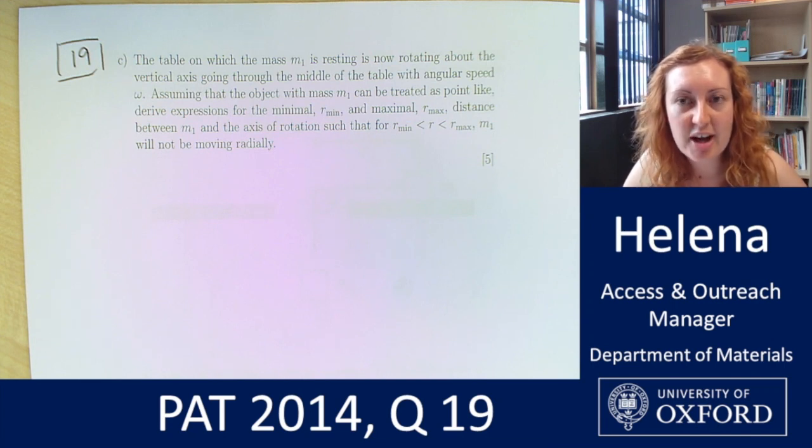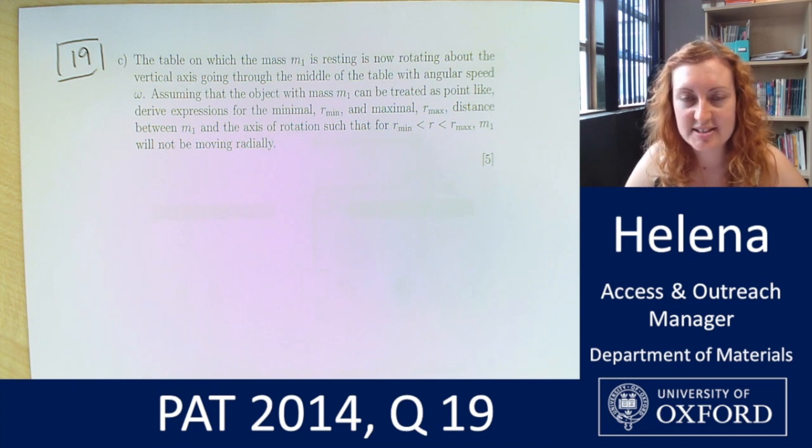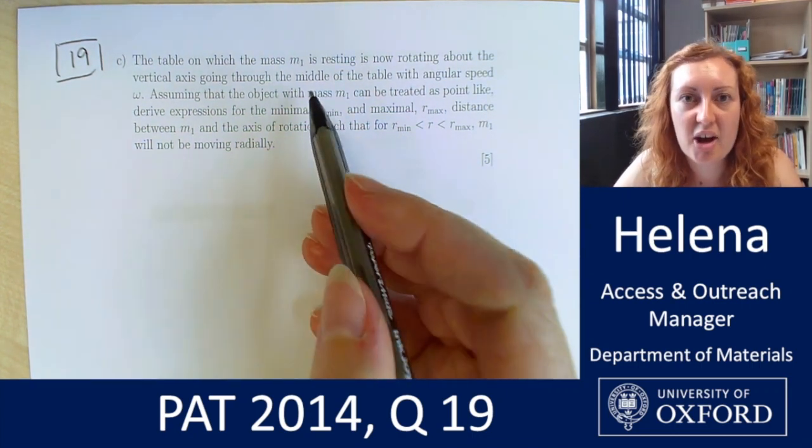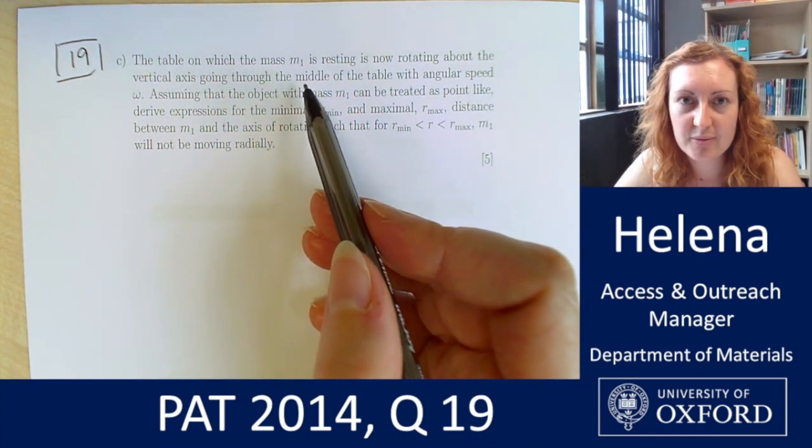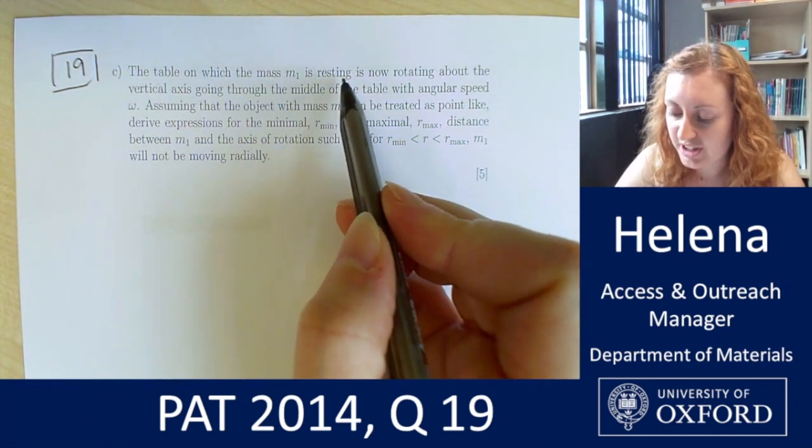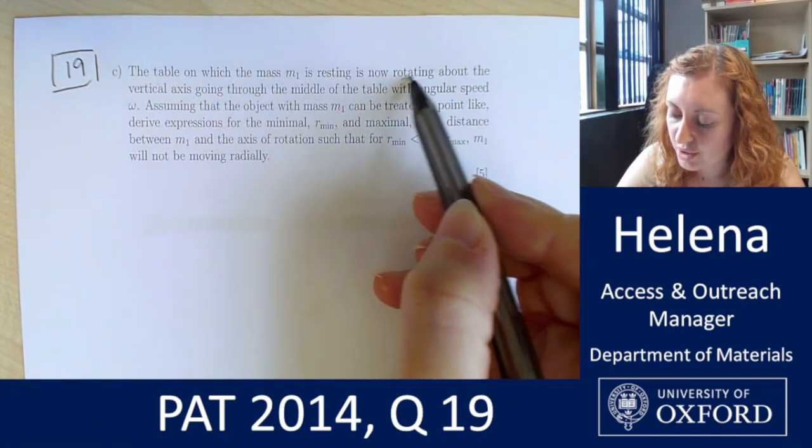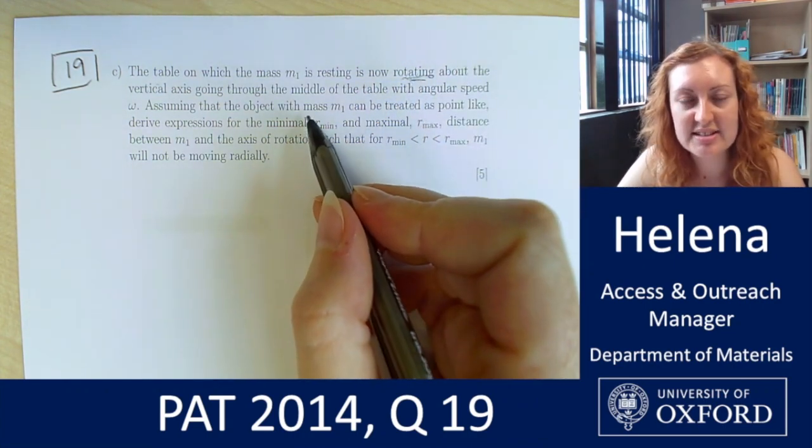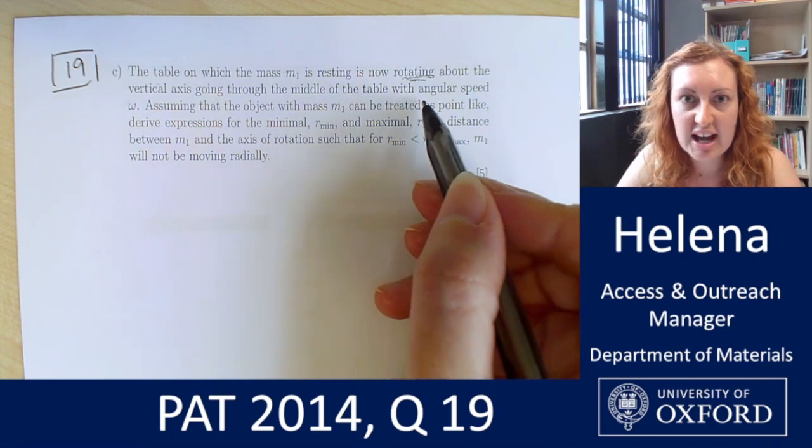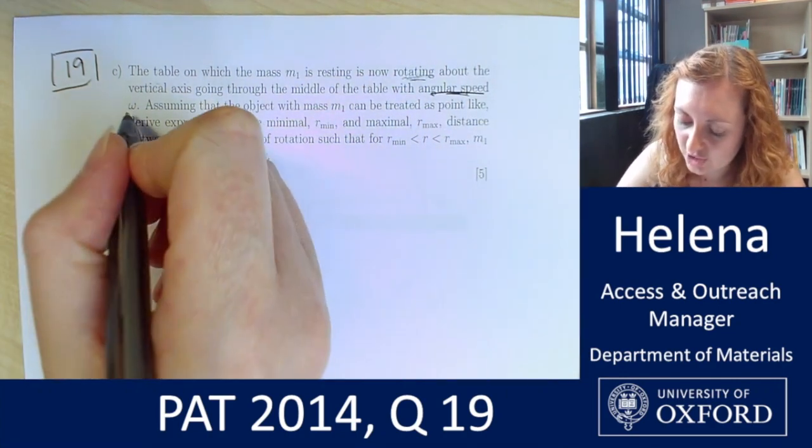So in part C, the final part of this question, we're now being asked to add something else to this equation. So we're still considering friction, we're now considering a rotating table. Now the table on which mass M1 is resting is now rotating about the vertical axis going through the middle of the table, so around the center of that hole with an angular speed omega.